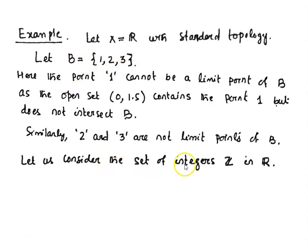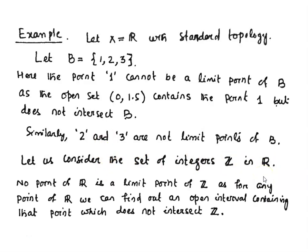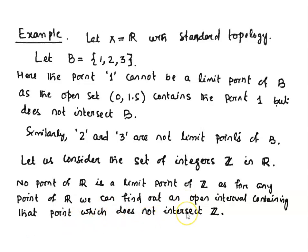Let us consider the set of integers Z in R. No point of R is a limit point of Z, as for any point of R we can find an open interval containing that point which does not intersect the set of integers.